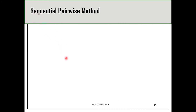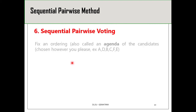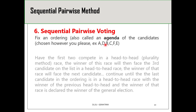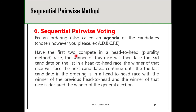The next voting method is called the sequential pairwise method, otherwise known as the tournament-style method. In sequential pairwise voting, there is a fixed ordering or agenda of the candidates determined prior to voting — for example, A, D, B, C, F, E. The first two candidates compete in a head-to-head battle, and the winner goes against the next candidate. That winner then faces the next, continuing until the last battle determines the overall winner.